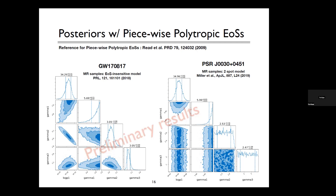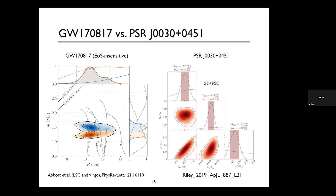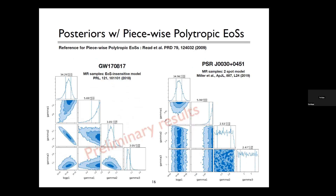The different mass-radius distributions correspond to different equations of state. However, this piecewise polytrope parameterization is not fully suitable for describing finite nuclei. From many studies of the equation of state and nuclear matter, we know that nuclear symmetry energy is very important for determining the maximum mass, radius, and related properties.